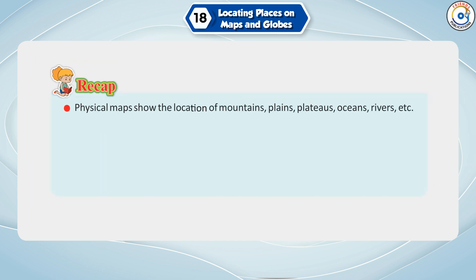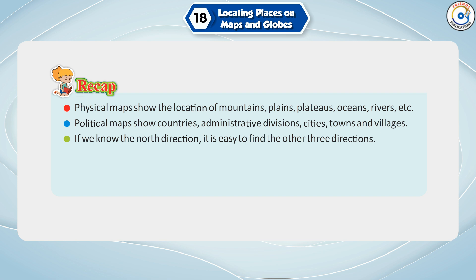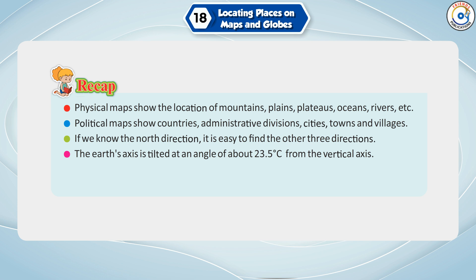Recap: Physical maps show the location of mountains, plains, plateaus, oceans, rivers, etc. Political maps show countries, administrative divisions, cities, towns and villages. If we know the north direction, it is easy to find the other three directions. The earth's axis is tilted at an angle of about 23.5 degrees from the vertical axis. A grid helps to identify the location of places or features on the globe. Coordinates pinpoint the exact location of a place or feature on the earth.